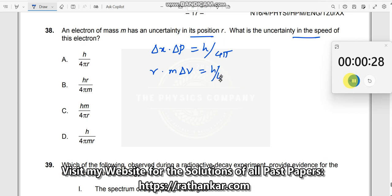Which equals h by 4 pi. So therefore delta v - what is he asking? Uncertainty in the speed. Delta v should equal h by 4 pi m times r. So h by 4 pi m times r. So the answer is G.